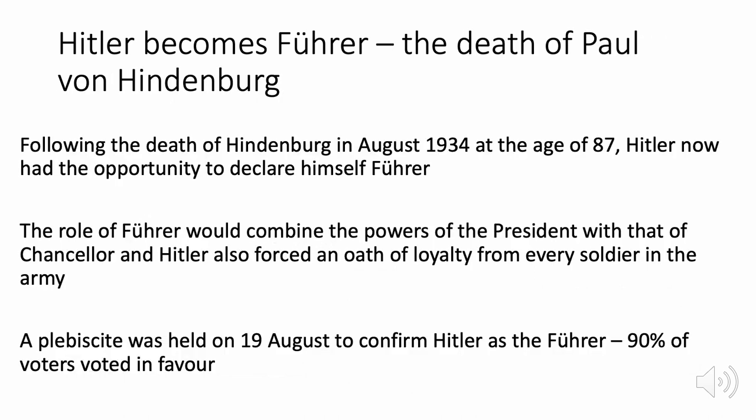The final event in Hitler's rise to Führer was the death of Paul von Hindenburg, who died in August 1934 at the age of 87. Hitler became Führer — a role combining the powers of president and chancellor, making him a dictator with almost unlimited power. He forced an oath of loyalty from every soldier and held a plebiscite on 19th August, with 90% of German voters voting in favour — though intimidation and massive propaganda were used.